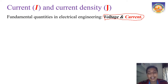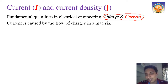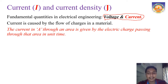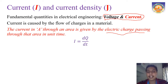Now let us get into current and current density. Current is caused by the flow of charges in the material. You apply a potential difference, establish an electric field, and because of that, charge flows in the material - that is what is meant by current. We define it as the electric charge passing through an area per unit time, that is, the rate of flow of charge. I is given by dQ/dt.